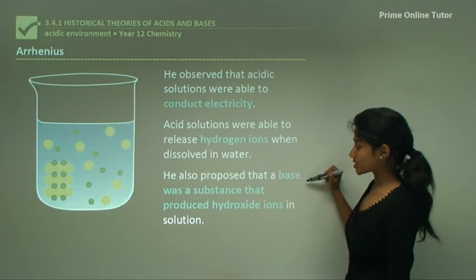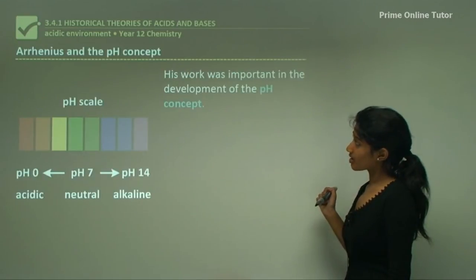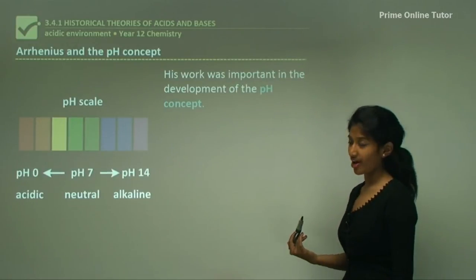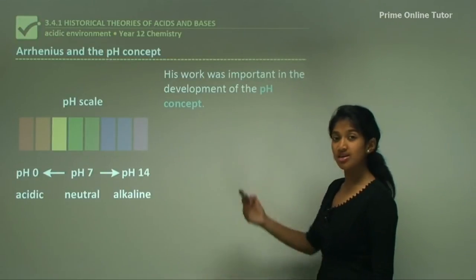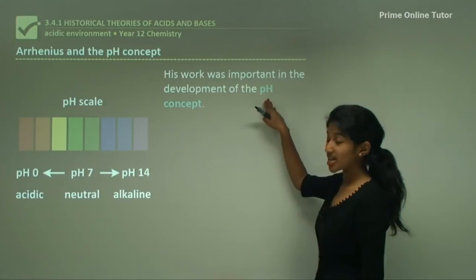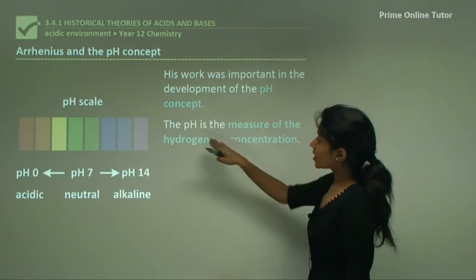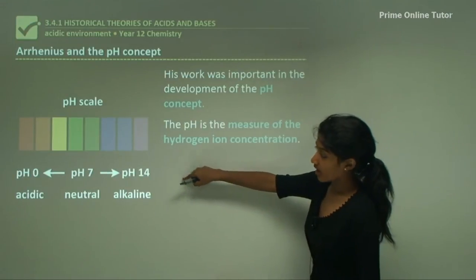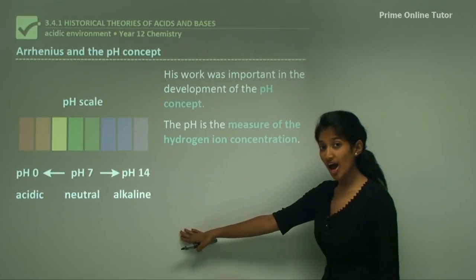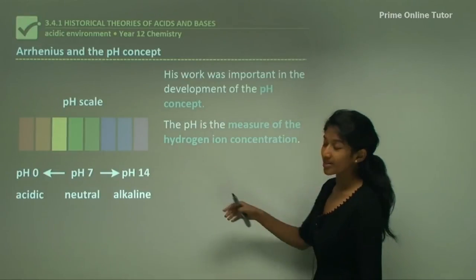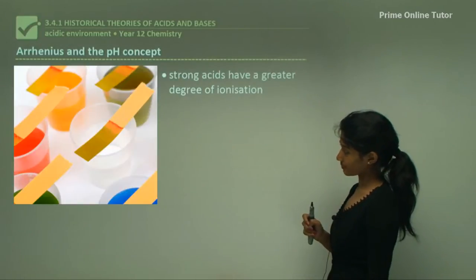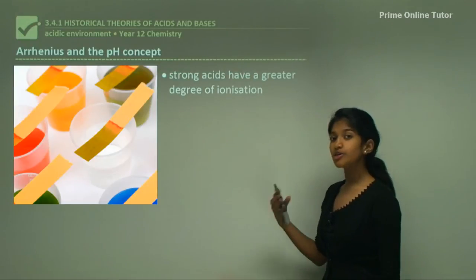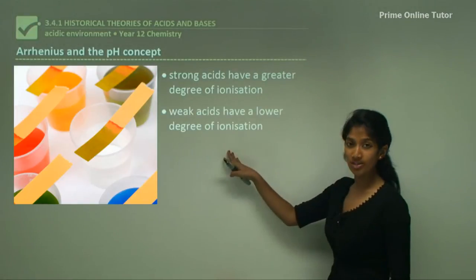Arrhenius also proposed that a base is a substance that produces hydroxide ions in solution. His work was very important for the pH concept — pH stands for potential hydrogen and is a measure of hydrogen ion concentration. The higher the pH, the lower the concentration of hydrogen ions, while a lower pH means a higher concentration. Stronger acids have a greater degree of ionization, readily forming hydrogen ions in water, while weak acids have a lower degree of ionization.